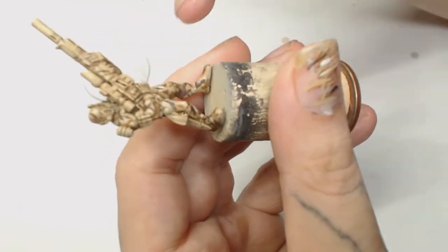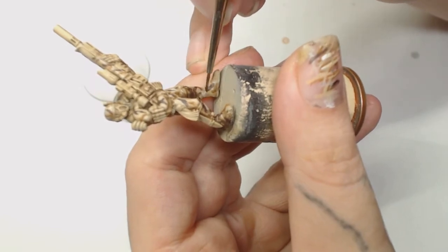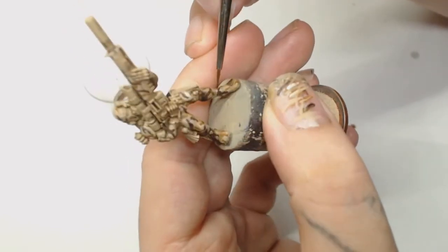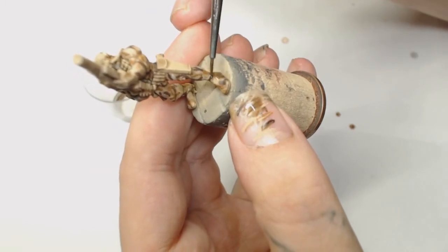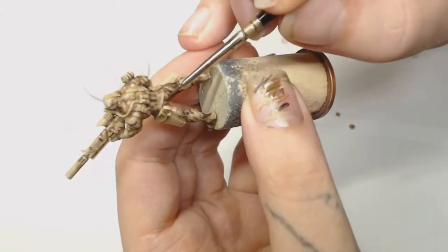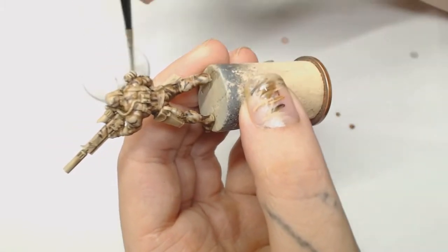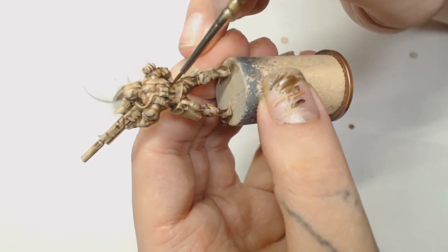Now we use Agrax Earthshade again with a drop or two of Nuln Oil and we're going to paint that into the recesses and then feather it out to the lighter areas, just leaving all your light areas at the top. You don't even really have to go all the way up to those if you don't want to. You can go around all the muscle textures of the suit and all the way around the outside of the straps where shadows are going to be created.